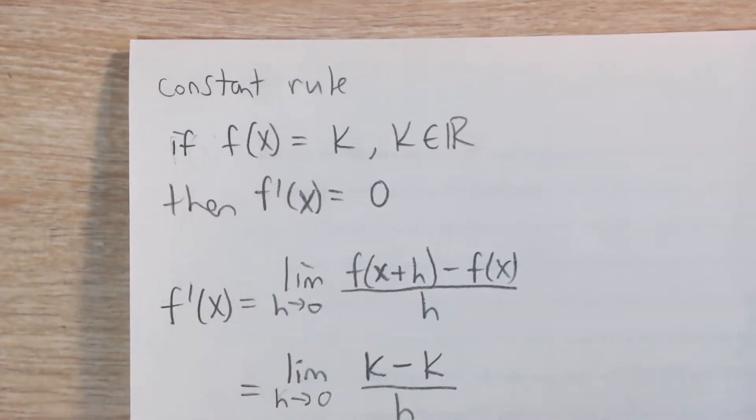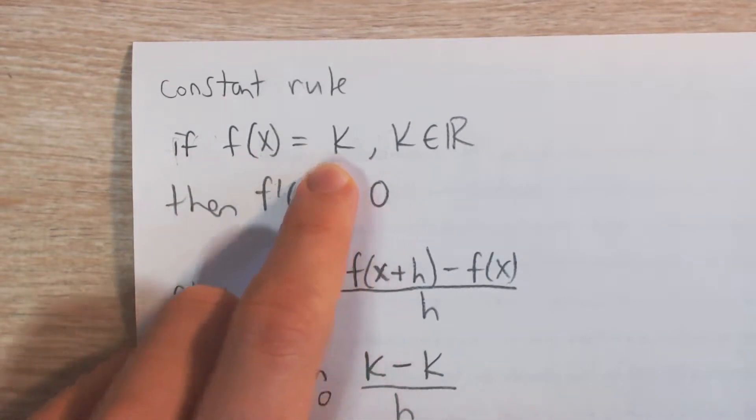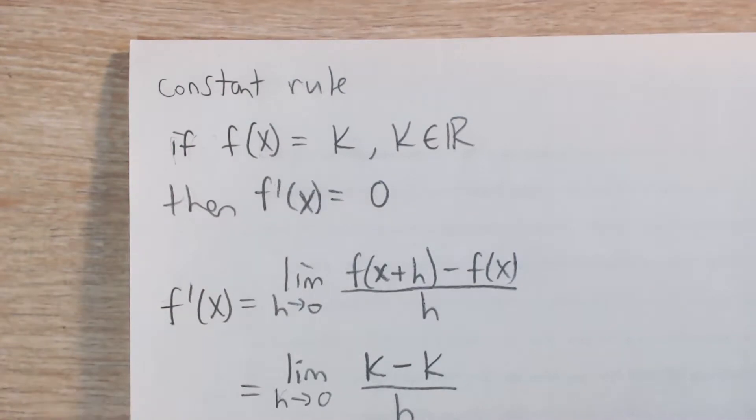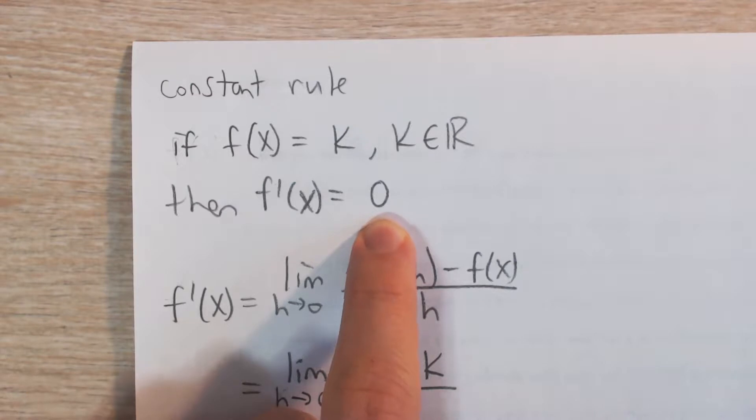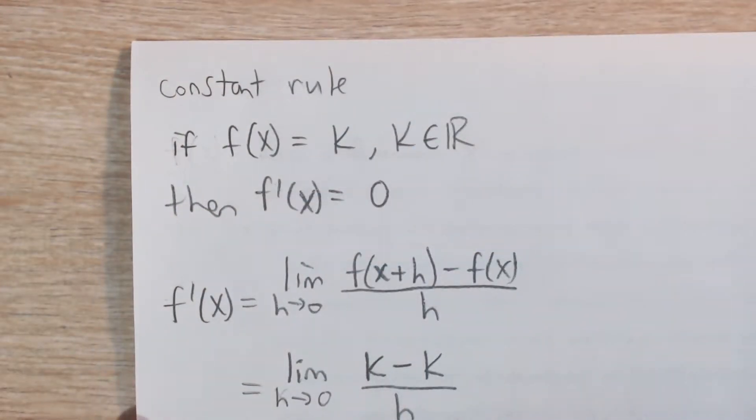Just intuitively, this makes sense because f(x) equals any number is going to be a horizontal line, and we know that the slope of a horizontal line is 0. The derivative represents slope, so it's going to equal 0. No matter what two points you choose, the slope will always be 0.